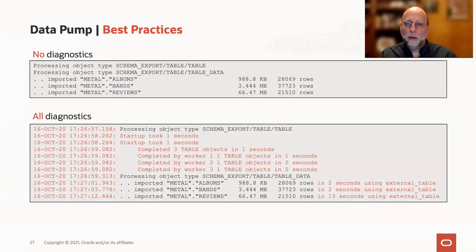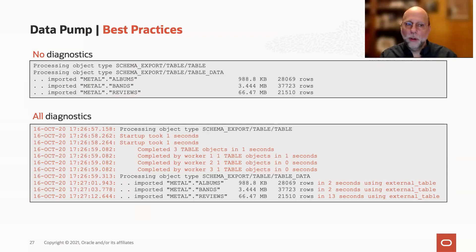But look at all the detail you get by setting log_time=all and metrics=y. Not only do you see that the parallel workers are kicking into gear to import multiple table objects in parallel, but you also see how long every individual table took. This can be really useful when diagnosing performance issues, allowing you to focus on the right time for an AWR or ASH report and on the right object — for example, to see if lob columns are affecting performance.